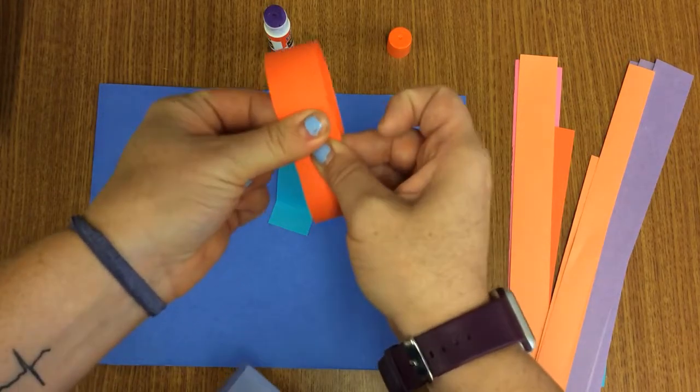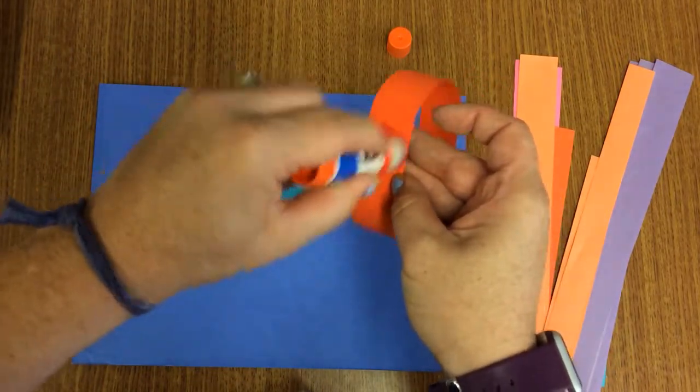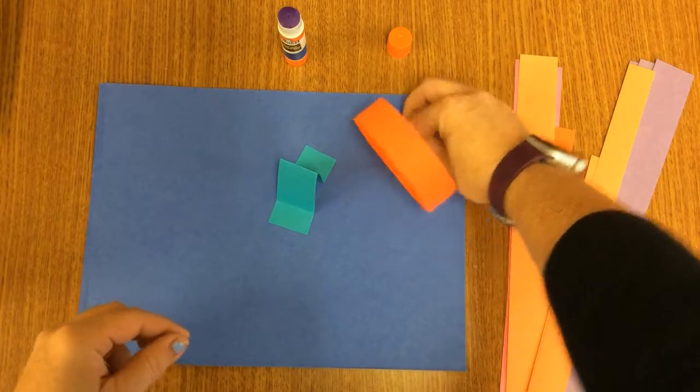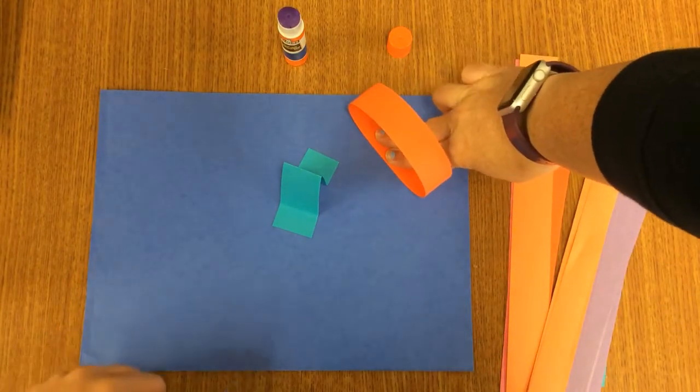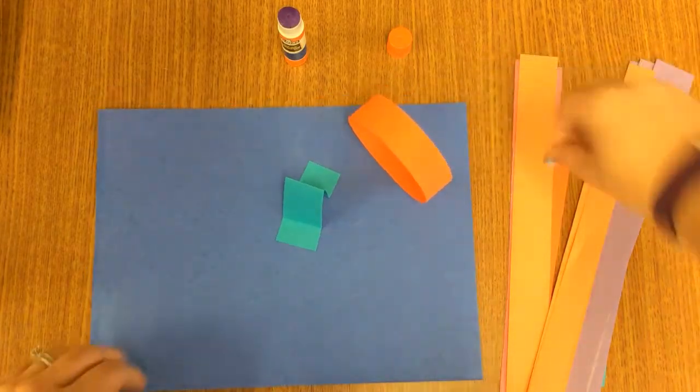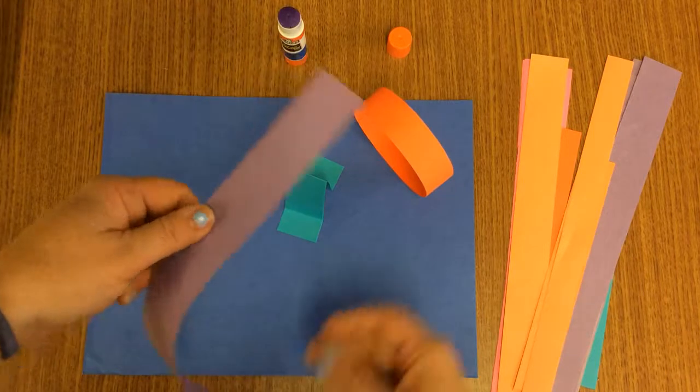And so once that's together, put a tiny bit of glue here and stick it where you'd want it to go. So maybe I want it here: one one thousand, two one thousand, three one thousand, four. So there's that one.